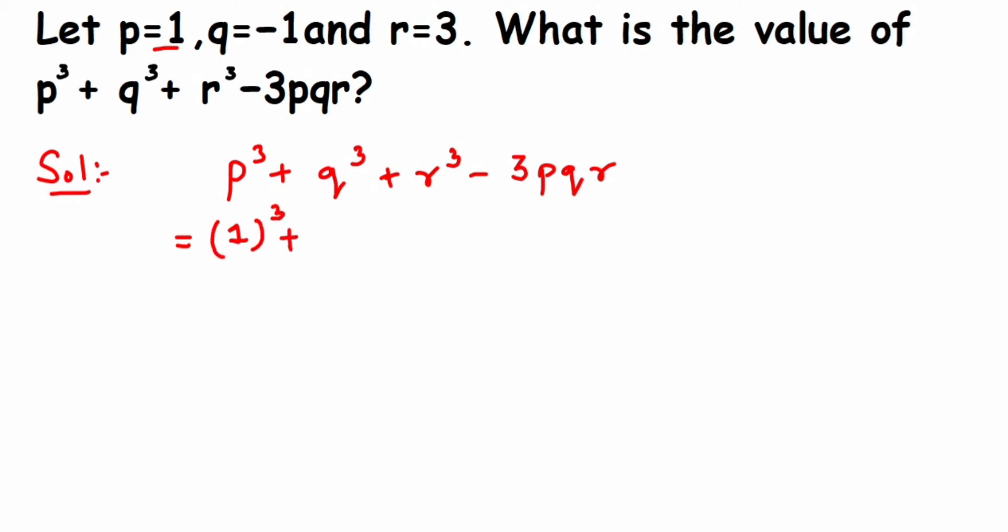Plus q value is minus 1, so minus 1³, plus r value is 3, so 3³, minus 3pqr, means 3 into p into q into r. So 3 into bracket, p value is 1, bracket close, then q value is minus 1, bracket close, then r value is 3. Here we are not placing the multiplication sign; it's understood when we use brackets.